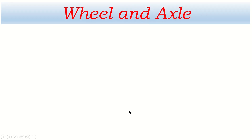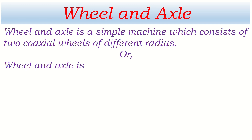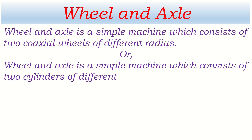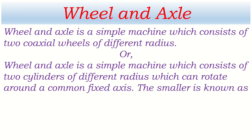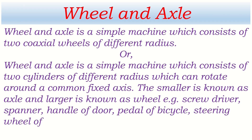Let's go to wheel and axle. Wheel and axle is a simple machine which consists of two coaxial wheels of different radius, or we can say two cylinders of different radius which can rotate around a common fixed axis. The smaller is known as the axle and the larger is known as the wheel. Examples include screwdriver, spanner, handle of door, pedal of bicycle, and steering wheel of a vehicle.